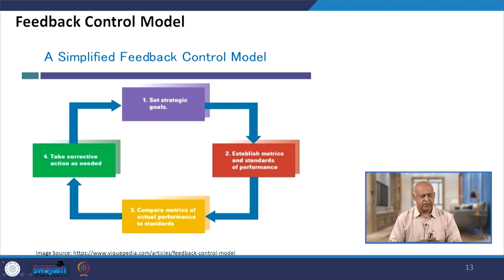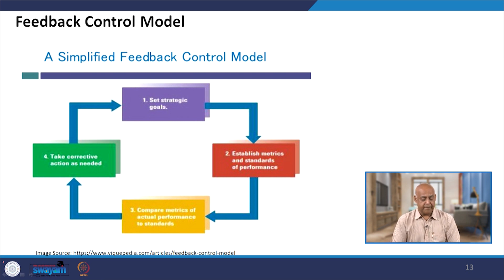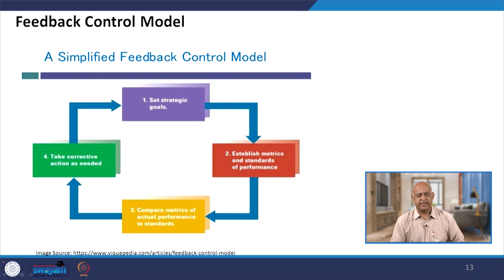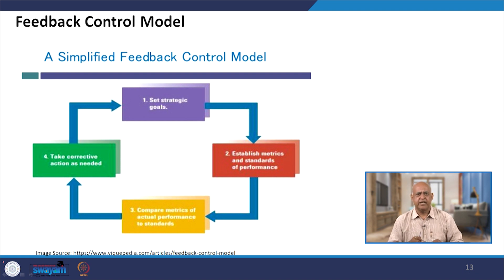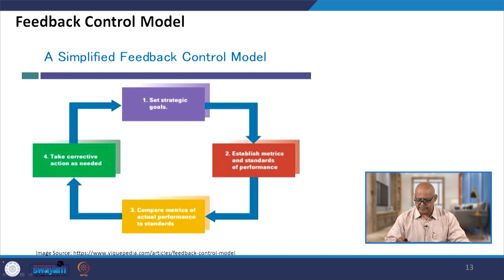A simplified feedback control system involves: setting strategic goals, establishing metrics and standards of performance, comparing actual performance against standards, and taking corrective action as needed. This creates a proper feedback control mechanism.